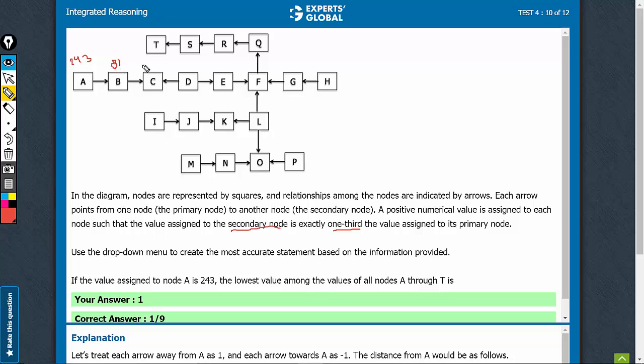243, so one-third, 81, 27. This is the secondary node of this.